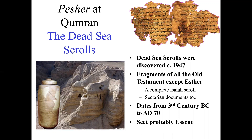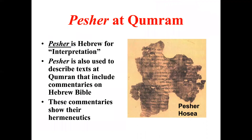At Qumran, there were commentaries on the Bible that were preserved. Scholars label these texts as Pesher texts because Pesher is the Hebrew word for interpretation. The most complete commentary is on a portion of Habakkuk that includes the biblical text and also the commentary on it. These commentaries show the kind of hermeneutics practiced in this Qumran community — what we call Pesher hermeneutics.